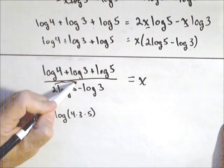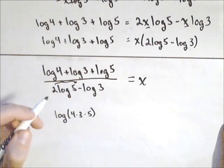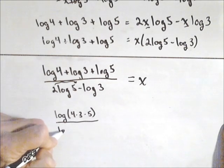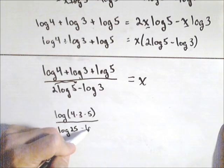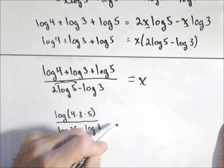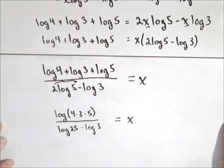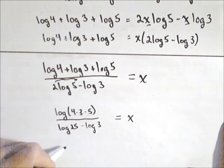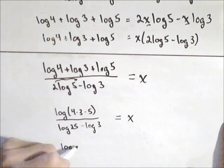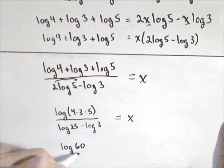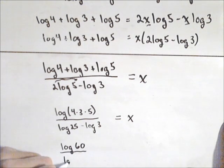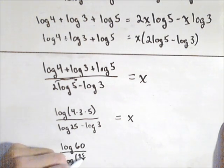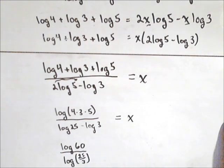And then bottom, I can put this back in the exponent. So that would be log of 25 because I got five squared minus log of three equals our x. Now let's just simplify that top. So we have log of 12 times five, which is 60. And we can actually do something similar on bottom because now we have a difference of logs. I can rewrite that as log of 25 over three.